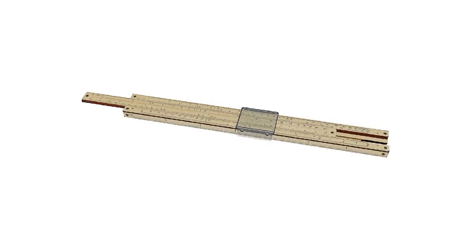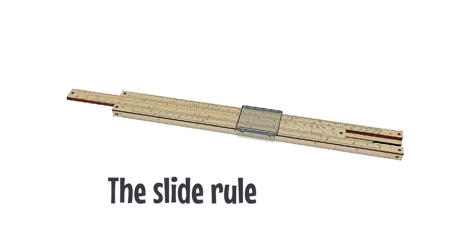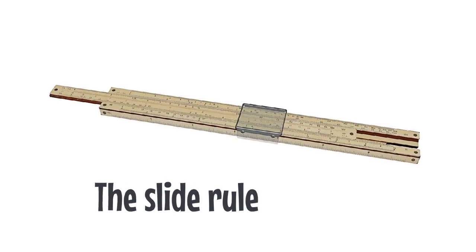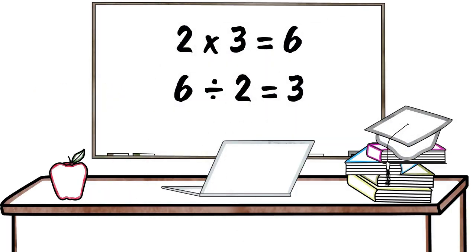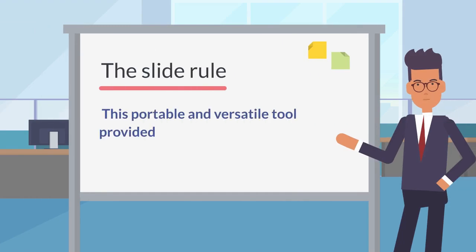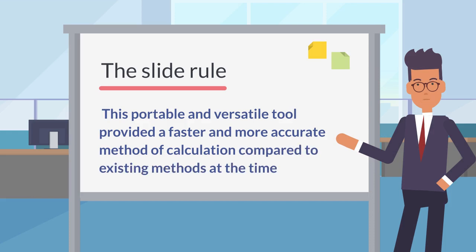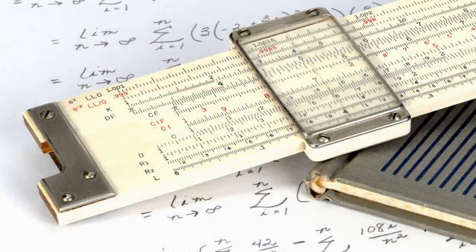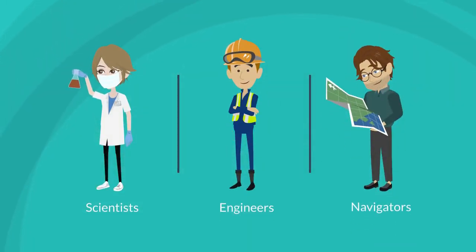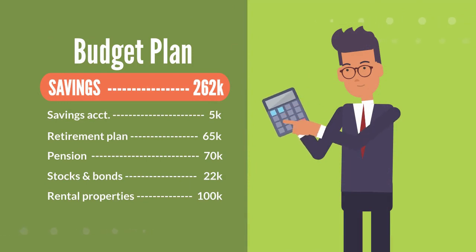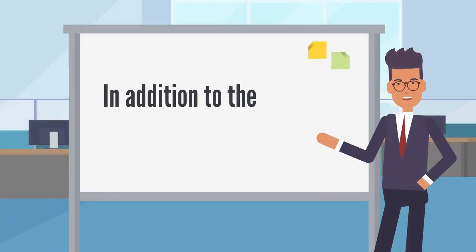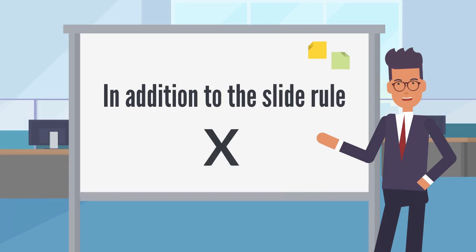Oughtred's most significant invention, the slide rule, was a breakthrough in the field of calculation. The slide rule consisted of two logarithmic scales that could be manipulated to perform multiplication and division. This portable and versatile tool provided a faster and more accurate method of calculation compared to existing methods at the time. Oughtred's slide rule became widely adopted by scientists, engineers, and navigators, and it remained the primary tool for calculation until the advent of electronic calculators. In addition to the slide rule, he introduced the notation for multiplication, using X as the symbol, which is still widely used today.